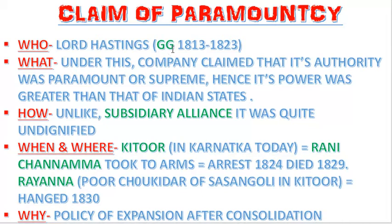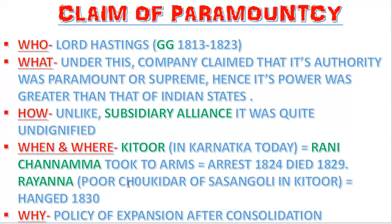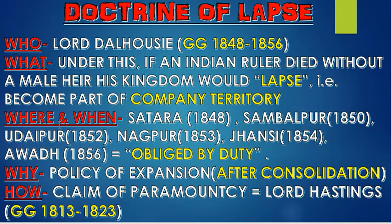The claim of paramountcy was introduced by Lord Hastings. Under this, the British tried to convince Indians that they were superior and Indians were inferior, making it the British duty to rule and develop undeveloped countries of the East. This is how western countries justified colonization, and it was more undignified than the subsidiary alliance. It did not go unchallenged — in Kittur, Karnataka, it faced challenges by Rani Chanamma and Rayanna.